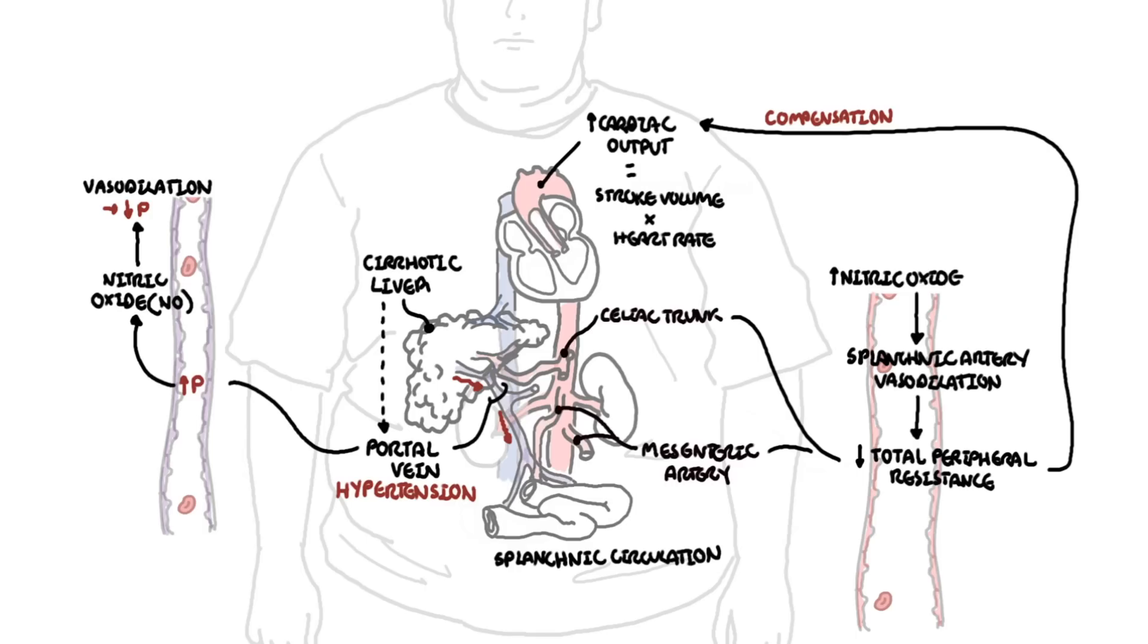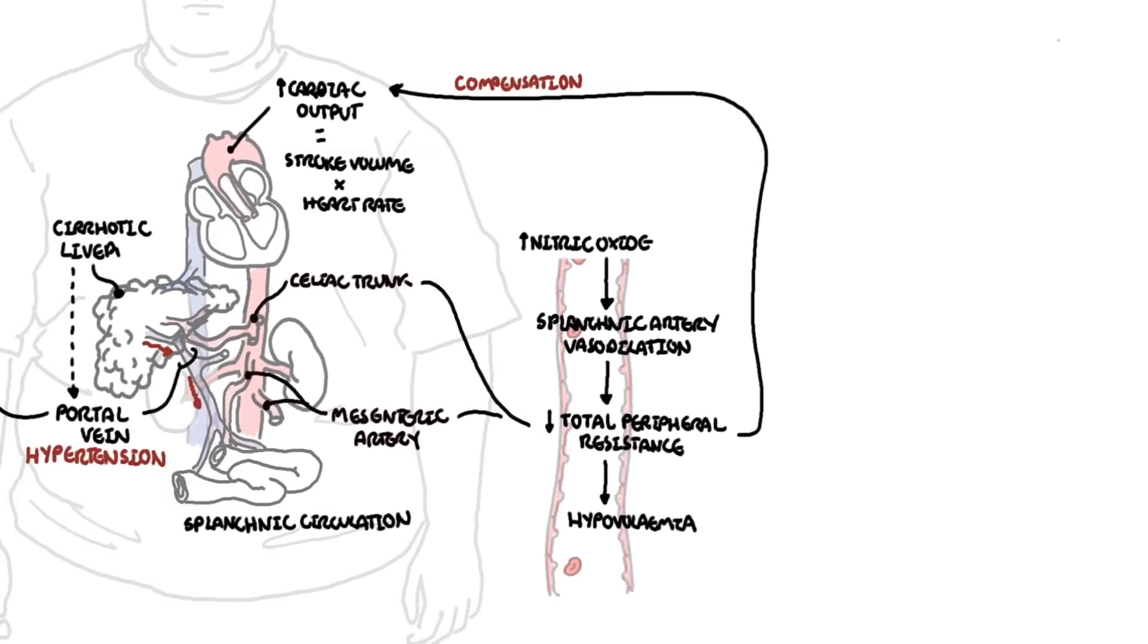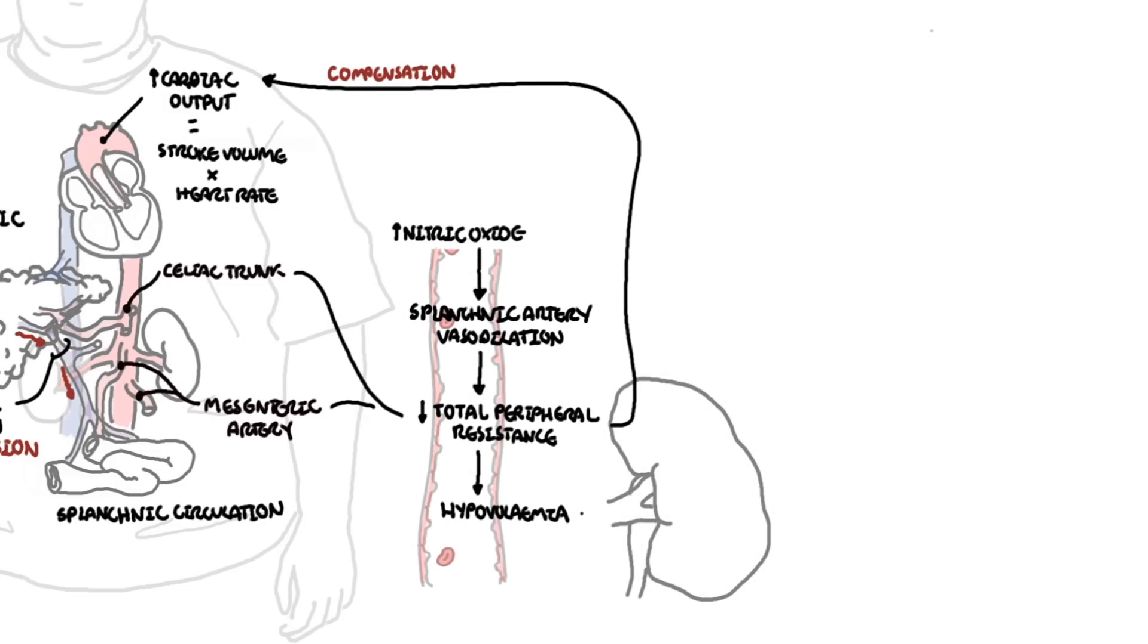As the hepatic disease becomes more severe, the splanchnic arterial vasodilation and reduced systemic vascular resistance leads to reduced effective circulatory volume. Reduced effective circulatory volume means less blood is actually getting to the kidneys.